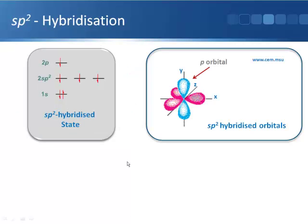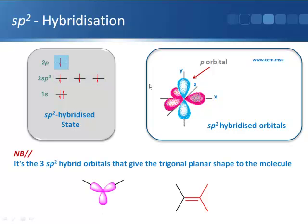So if we look at what that actually looks like when we draw the orbitals, shown here in pink are the hybrid orbitals. And you can see that they've got this trigonal planar shape to them. And then this all-important unchanged P orbital, shown in blue here, sits above and below the plane of these three hybrid orbitals.